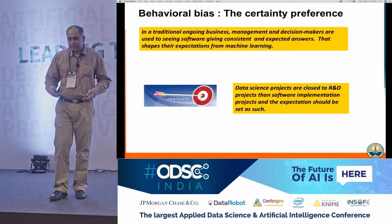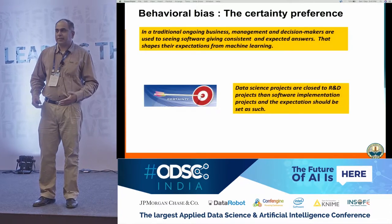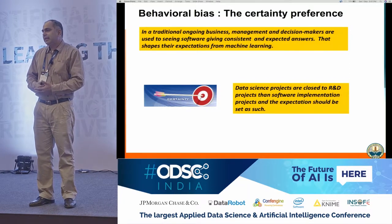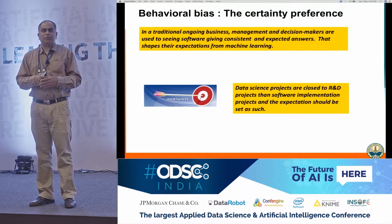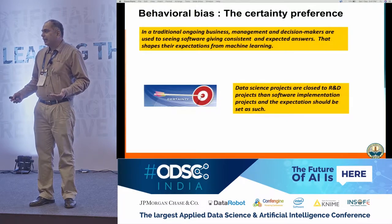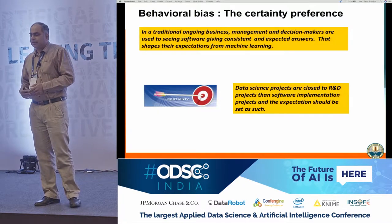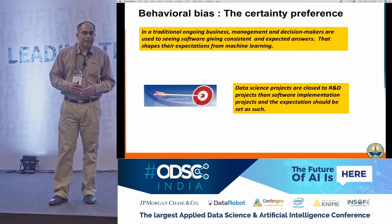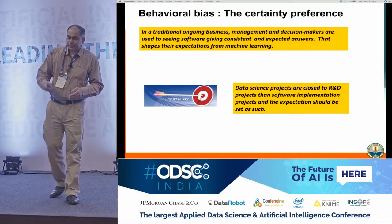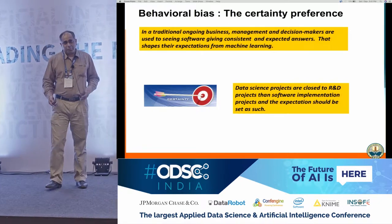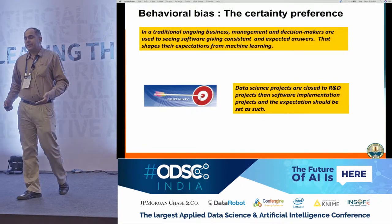This is what happens to people in traditional line of businesses who haven't been exposed to machine learning, and as machine learning is going more and more down the ladder, we are seeing more of this. The way to set the expectation is to tell them the output is not going to be 100% correct. A machine learning project is more like an R&D project than a software implementation project, and it really needs to be planned as such.